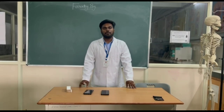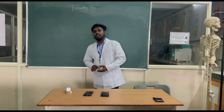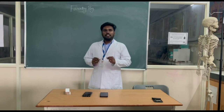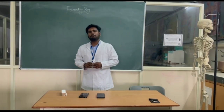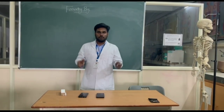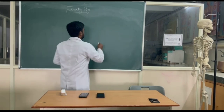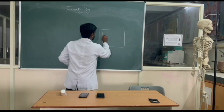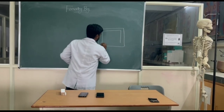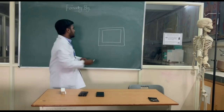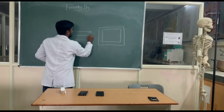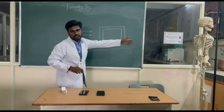Before entering into the topic of the Faraday mat, let me give a brief introduction about what a Faraday cage is. In 1836, Michael Faraday invented a Faraday cage, which stops the EMP — electromagnetic pulse — using a metal box. Electromagnetic impulses or waves pass from one direction to another.